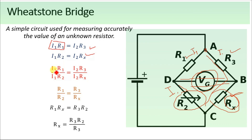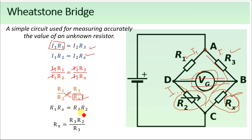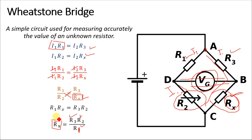Dividing the first equation by the second, we get: (I1 × R1) / (I1 × R2) = (I2 × R3) / (I2 × Rx). The I1 and I2 cancel out, giving us R1 / R2 = R3 / Rx. Solving for Rx, we multiply: R1 × Rx = R3 × R2, so Rx = (R3 × R2) / R1. If we know R1, R2, and R3, we can easily calculate the value of Rx.